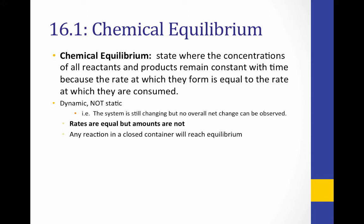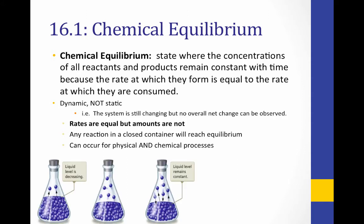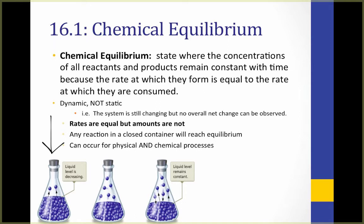Any reaction in a closed container will eventually establish equilibrium. Equilibrium can occur for both physical and chemical processes. Take this example of a physical equilibrium system: a liquid is placed in a closed flask. As soon as the flask is closed, some of the liquid will begin to evaporate. After a while, there will be a good amount of particles in the vapor phase, meaning some vapor particles can begin to re-condense. Eventually, the rate at which particles are evaporating will equal the rate at which particles are recondensing, meaning it will be at equilibrium, and the liquid level will remain constant.